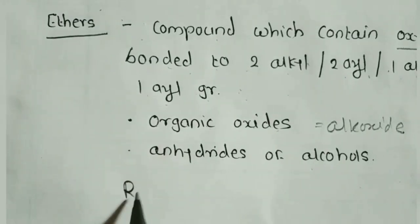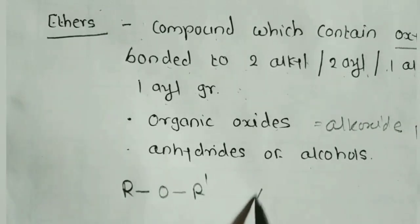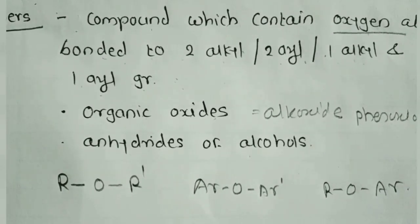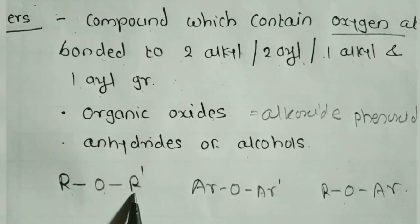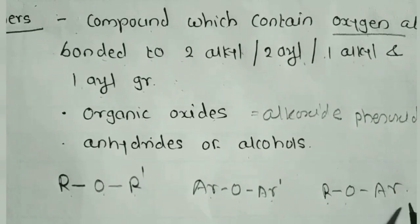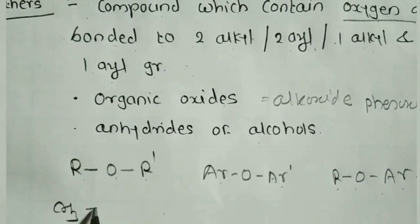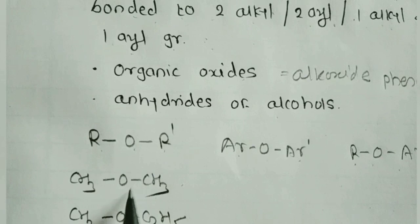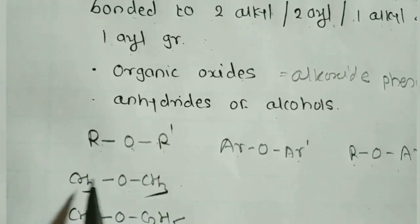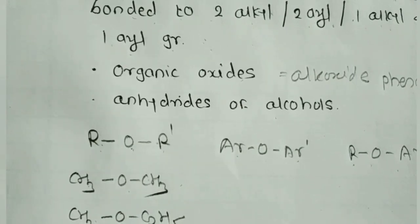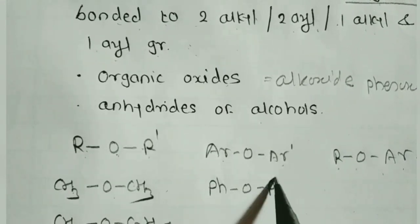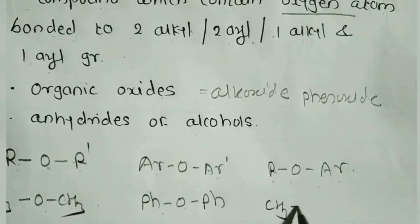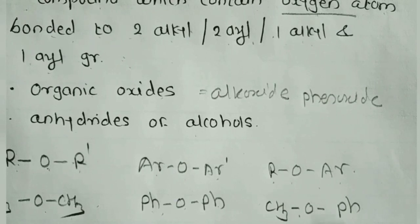For examples of ether: R–O–R', Ar–O–Ar', and R–O–Ar — these are three types. Specifically: CH3–O–CH3 or CH3–O–C2H5, where the oxygen atom is attached to two alkyl groups, either symmetrical or unsymmetrical. Also Ph–O–Ph, where the oxygen is attached to two aromatic rings, and examples where oxygen is attached to one alkyl group and one aryl group.